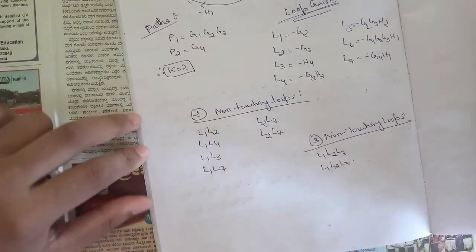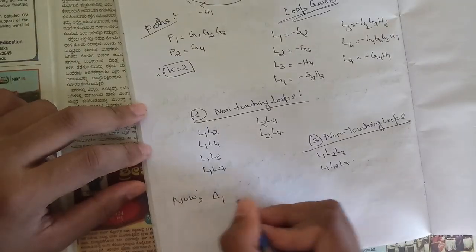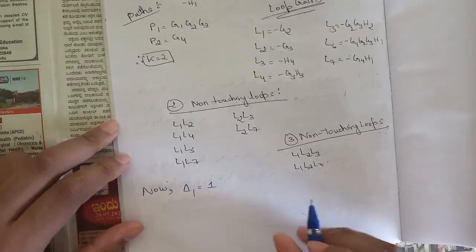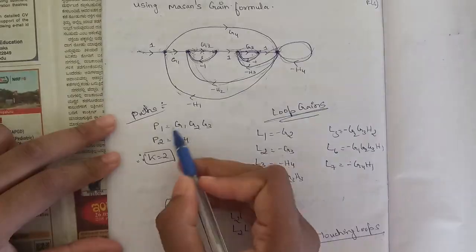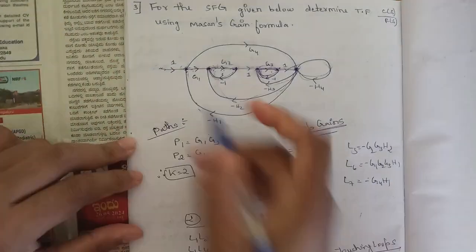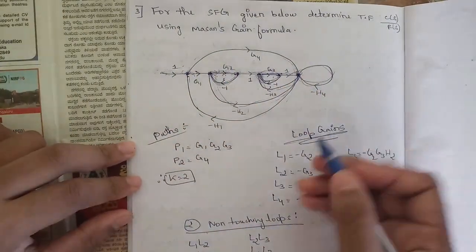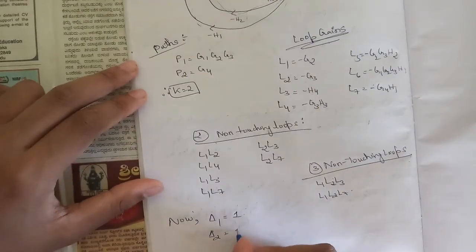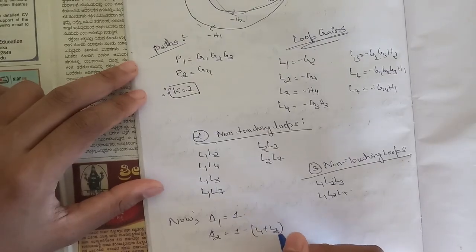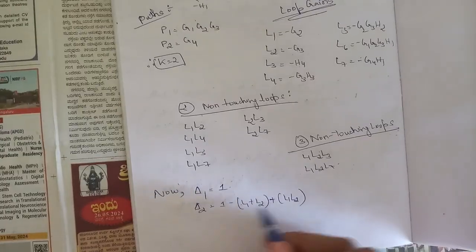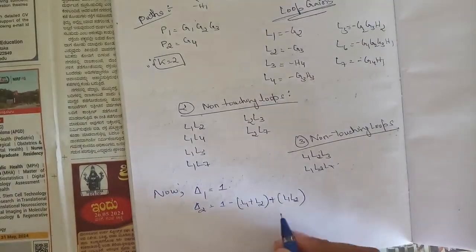Now we need to calculate delta1 and delta2 - that is, one minus the loop gains that do not touch any forward path. For the first forward path g1·g2·g3, all loops are touched, so delta1 equals one minus zero, which is 1. For p2 (which is g4), there are two non-touching loops L1 and L2, so delta2 equals one minus (L1 plus L2) plus L1·L2, accounting for single loops then two non-touching loops.